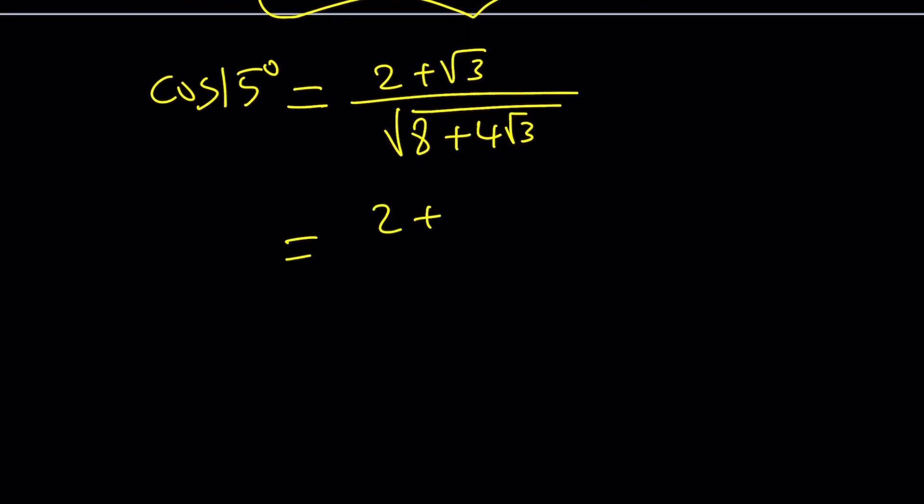So here's what we can do. First of all, notice that I can take out a 2 here. And that's going to give me the same thing that I got before. So 2 times (4 + 2√3). And if you square root these separately, multiply, and here we get the following.